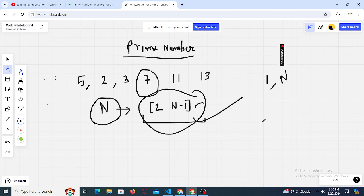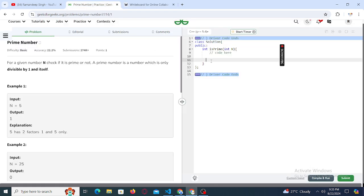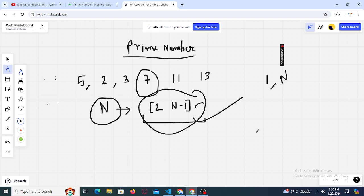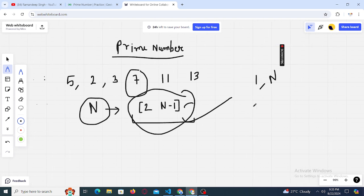And check for every number whether that number divides n or not. So we'll also have to handle a special case. The special case is when n is one, so when n is one it's not a prime number, and when n is two it is a prime number.